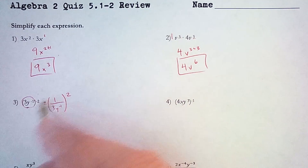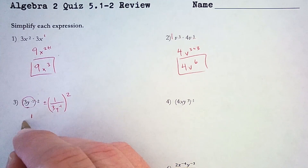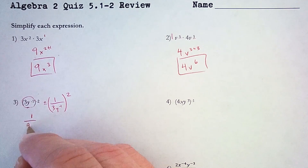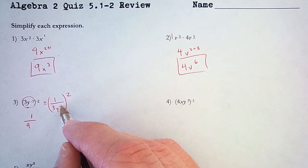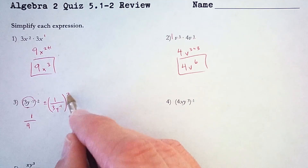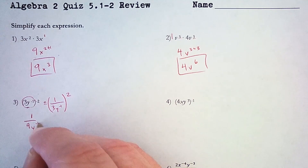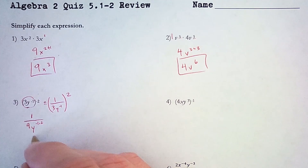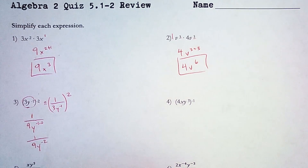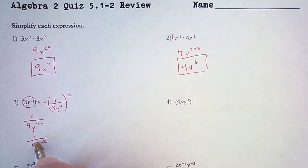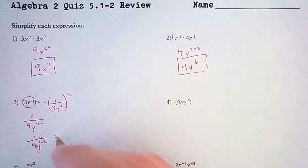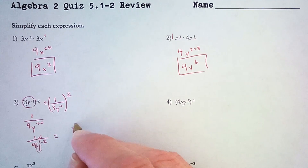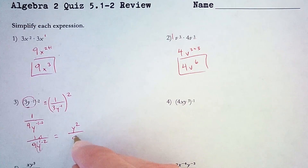Now I'm going to start raising things to the 2nd power. 1 to the 2nd power is 1. 3 to the 2nd power is 9. And then y to the negative 1 to the 2nd power — I multiply those exponents, so that's y to the negative 1 times 2 power. So that's 1 over 9y to the negative 2 power. I won't leave my answer like that because I don't want negative exponents. This negative 2 power only applies to the y, so I move it up to the numerator and it becomes a positive 2 power. So I'll have y squared over 9.